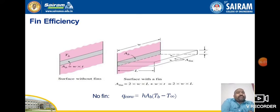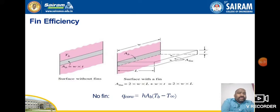Fin efficiency plays a very important role in designing equipment — it determines how long the fin should be and how much insulation is needed. Comparing a surface without a fin versus with a fin: without a fin, only the base area W×T is available. With a fin, the area becomes 2×(half-width × length) + W×T, effectively increasing the total surface area.